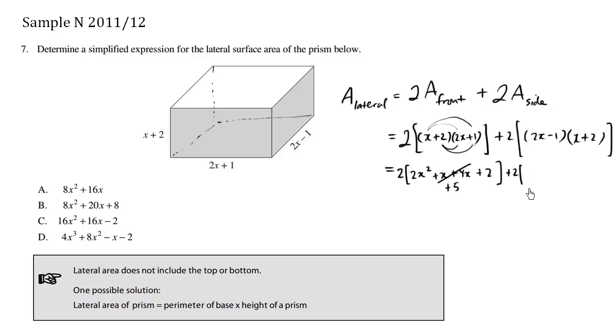And let me just finish this right part off here. So doing this a bit faster, 2x times x is 2x squared. We have positive 4x minus x is positive 3x. And then negative 1 times positive 2 is negative 2.